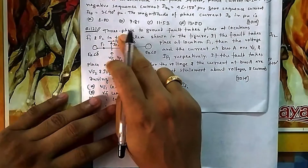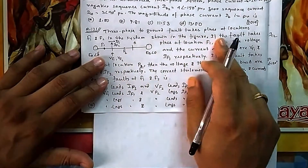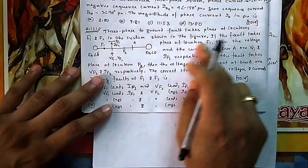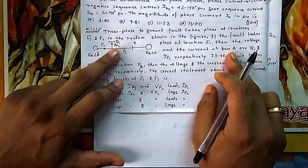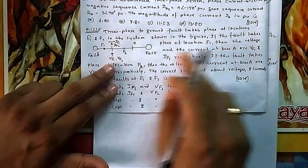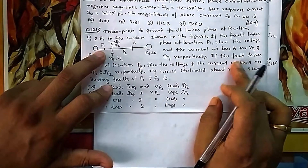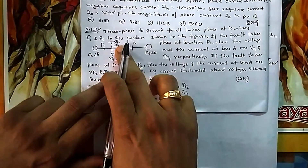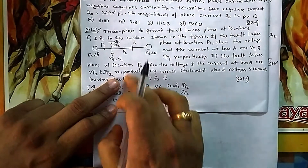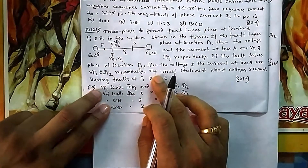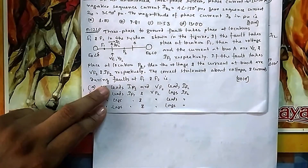In question number 121, a three-phase to ground fault takes place at locations F1 and F2 in the system shown in the figure. If the fault takes place at location F1, the voltage and current at bus F is V_F1 and I_F1. If the fault is at F2, then V_F2 and I_F2 are the corresponding voltage and current from bus A. We need to find the correct statement about voltage and current during faults F1 and F2.